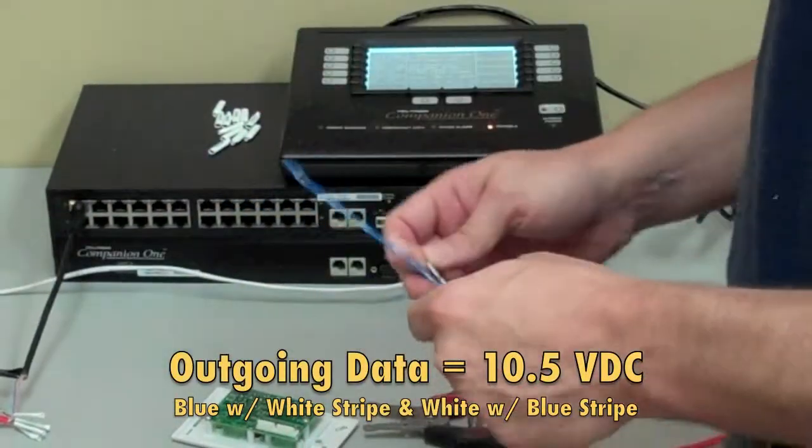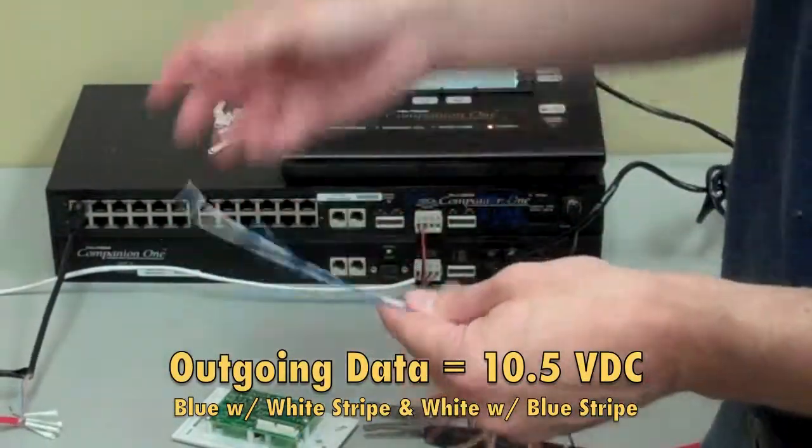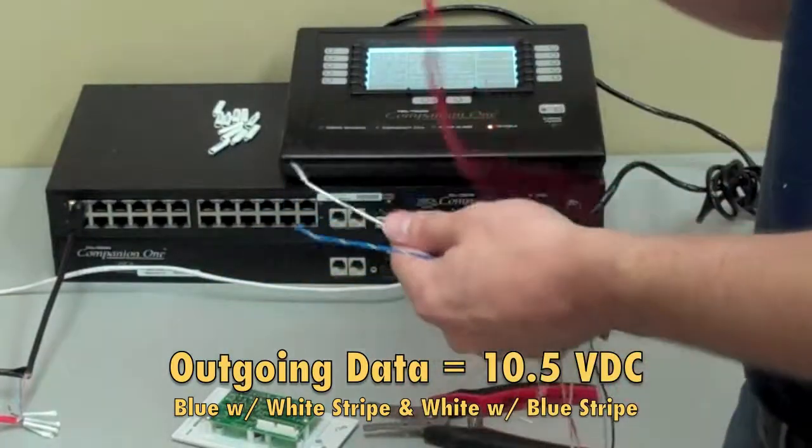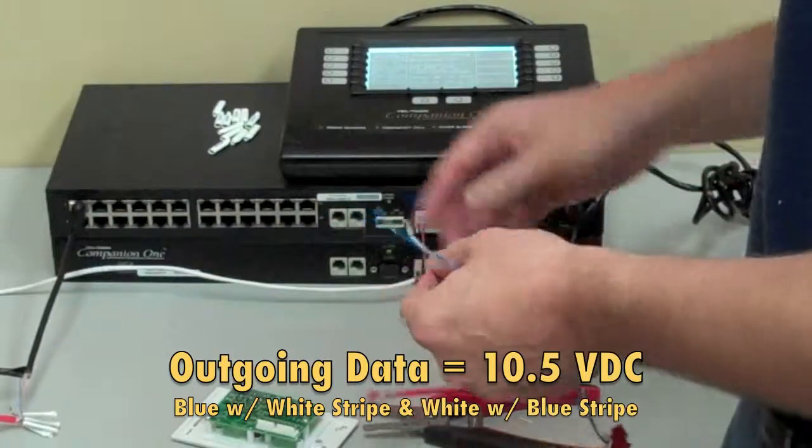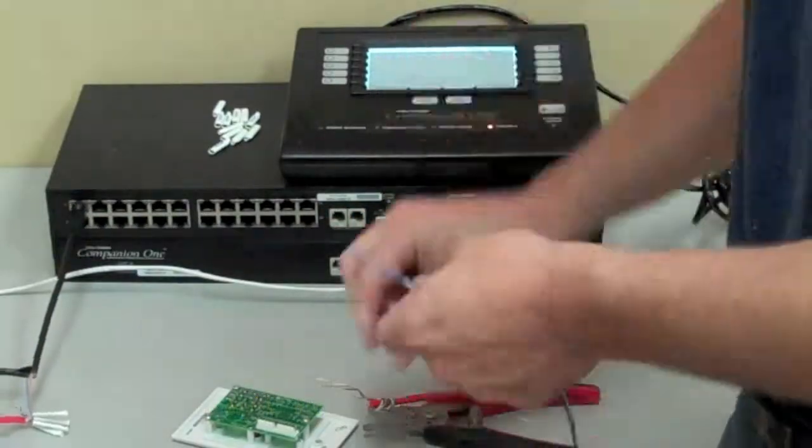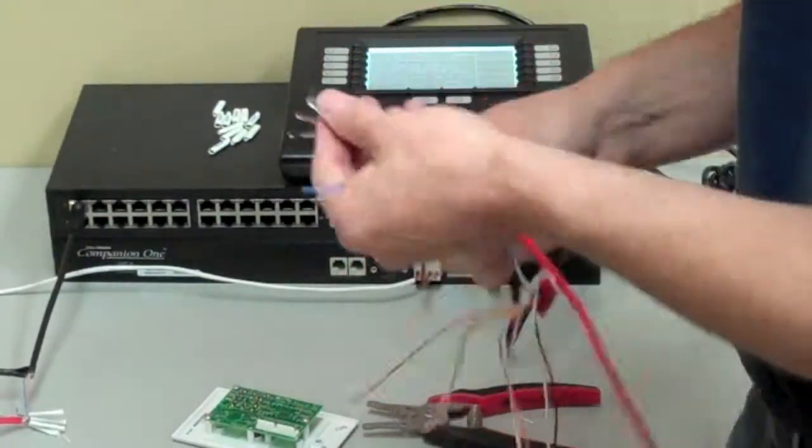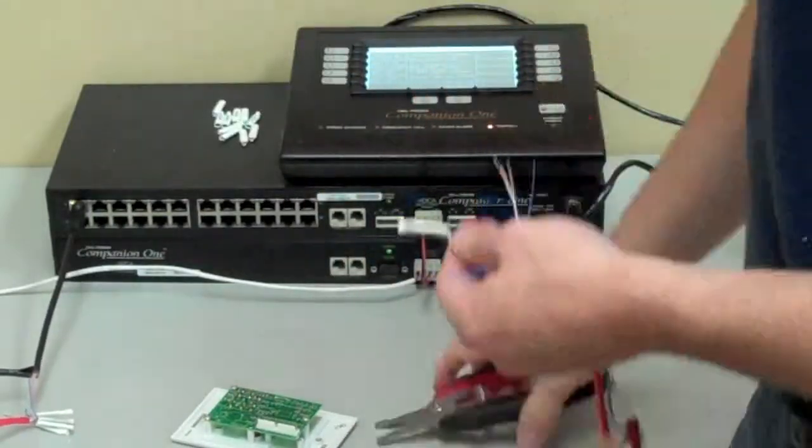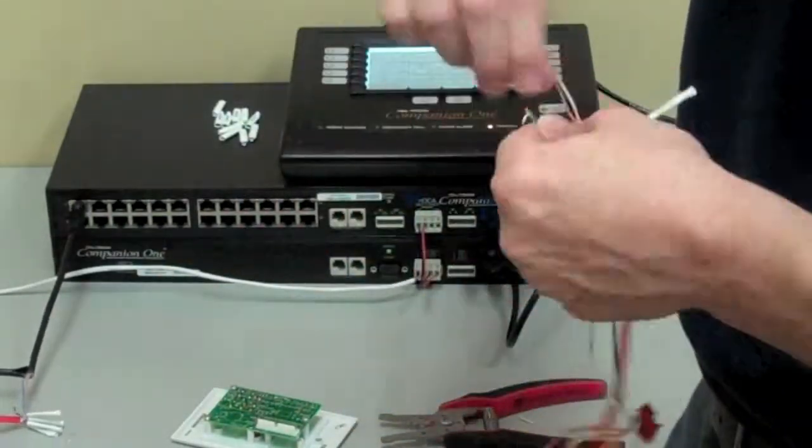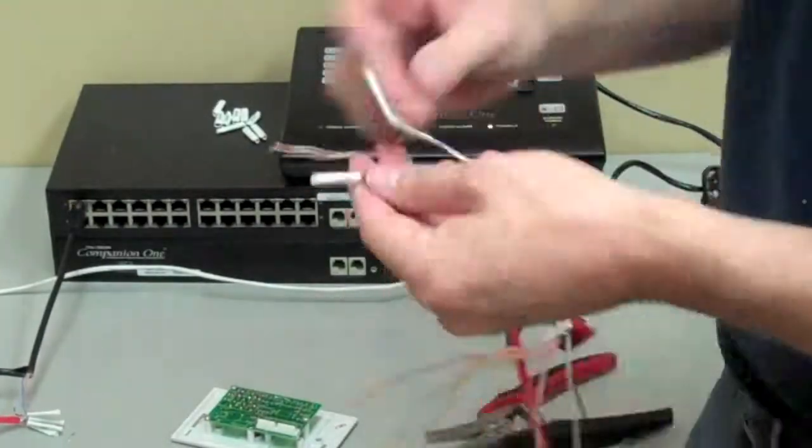Next up is our outgoing data pair. You have a blue wire with a white stripe. That's going to indicate your negative lead, and you have a white wire with a blue stripe, which is going to indicate your positive lead. So just go ahead and wire that up to the next wire run that goes over to your other station. And there we go.